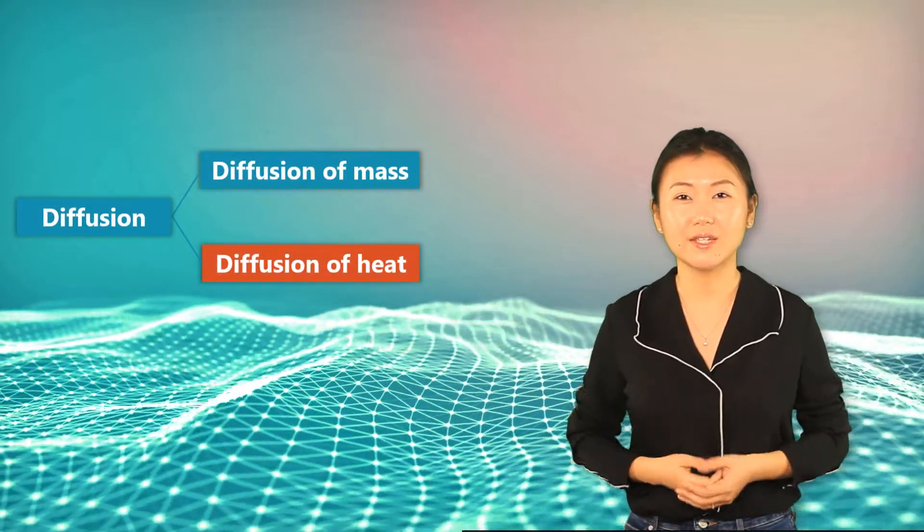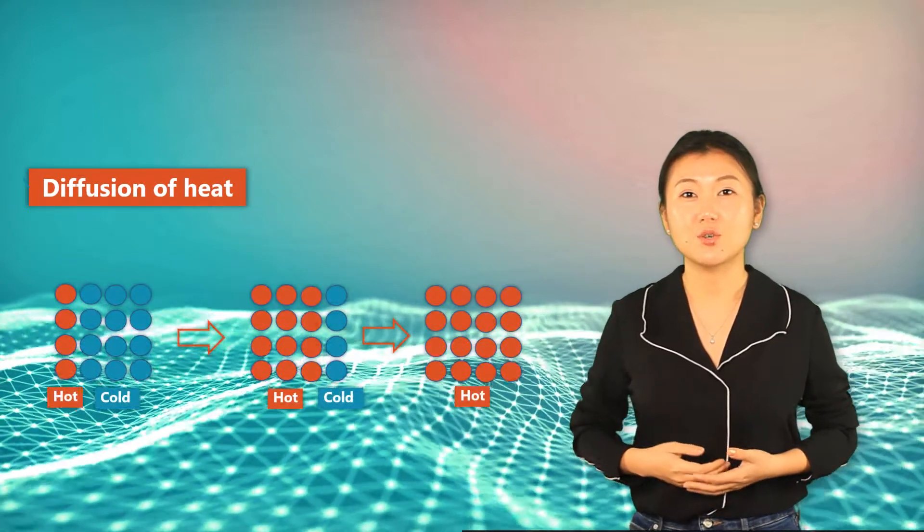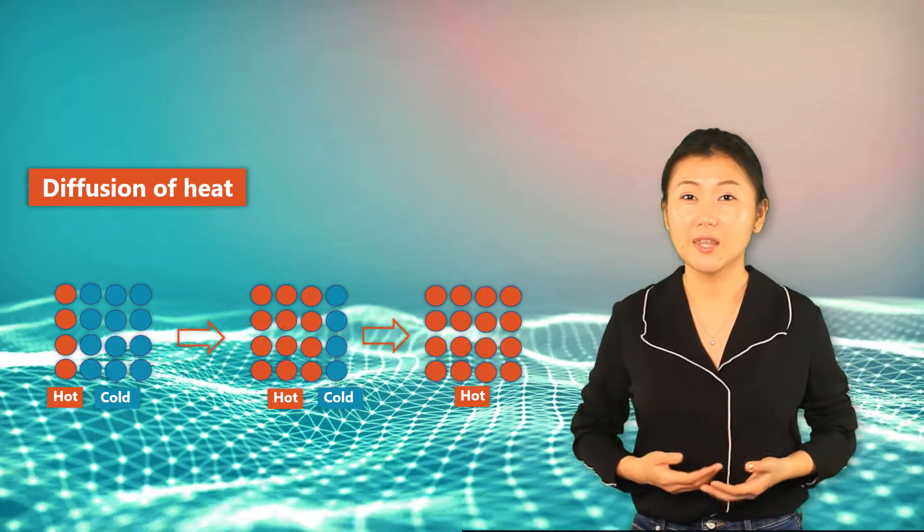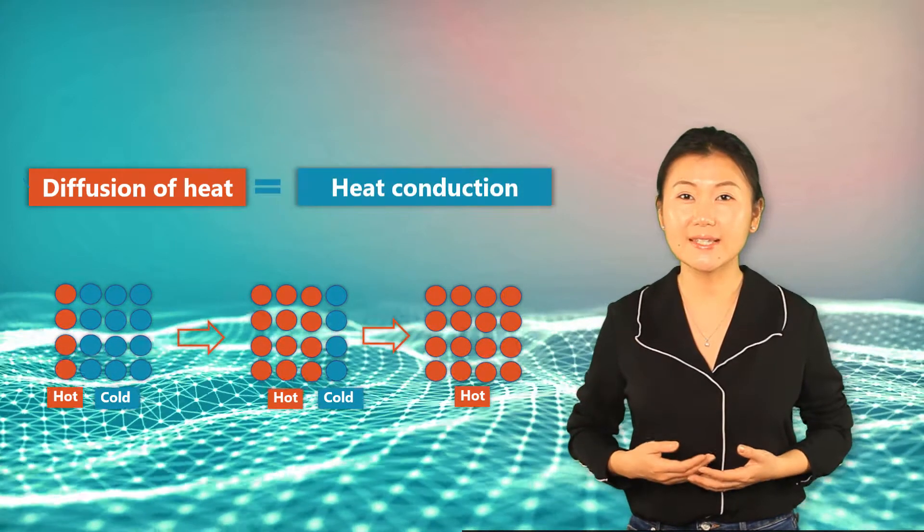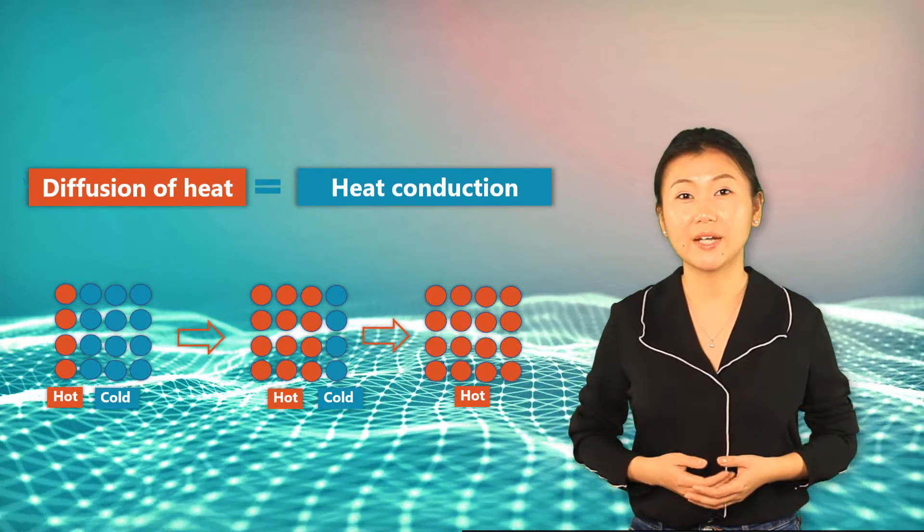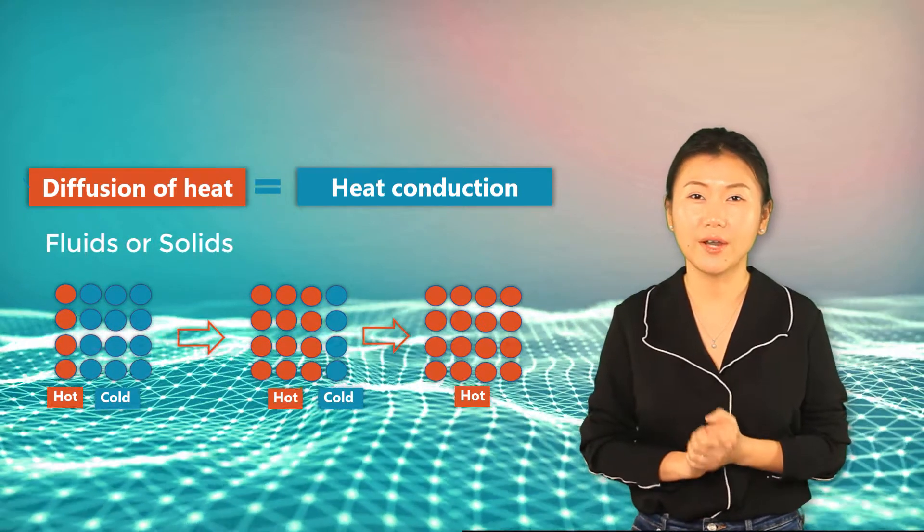The other type of diffusion is related to heat. We call it diffusion of heat. It is driven by a temperature gradient from the hot side to the cold side. In fact, the principle of heat diffusion is the same as heat conduction. Heat is transferred by collision between neighboring molecules, whether in a solid or in a fluid.